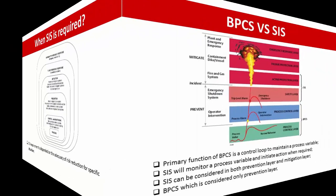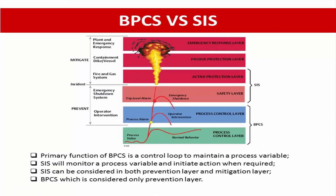Comparing BPCS and SIS: if you think about the components, the SIS and BPCS, or Basic Process Control System, are similar. They are both composed of sensor, controller, and final element. Although the hardware architecture is similar between SIS and BPCS, they are very different in function. The primary function of the BPCS is a control loop, which generally maintains the process variable, whereas the SIS monitors the process variable and initiates action when required.